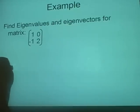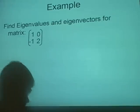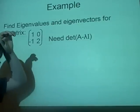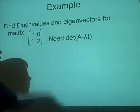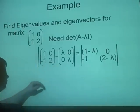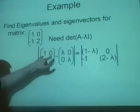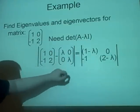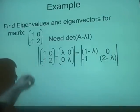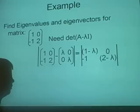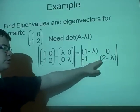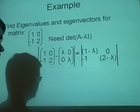Example: find the eigenvalues and eigenvectors of the given matrix. First, as stated, we need to find det(A - λI) = 0. We compute A minus lambda times the identity matrix, giving us the matrix with entries (1 - λ), 0, -1, and (2 - λ).